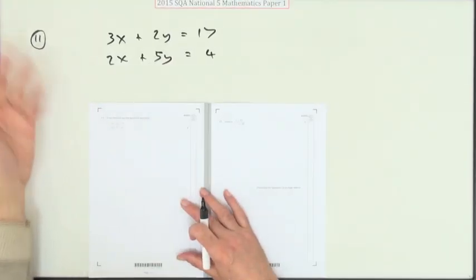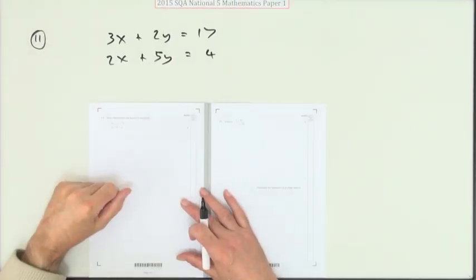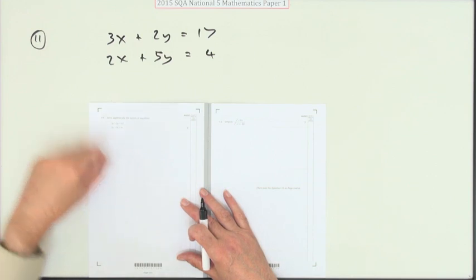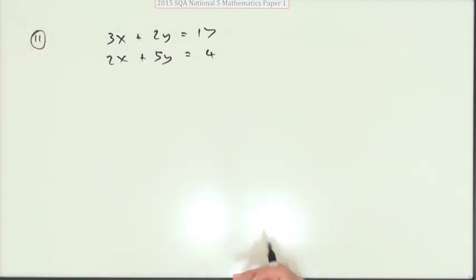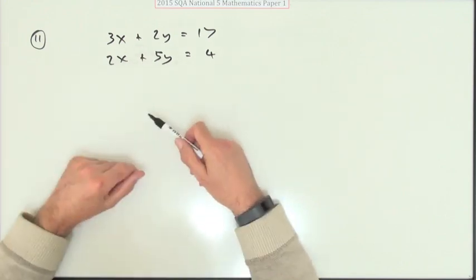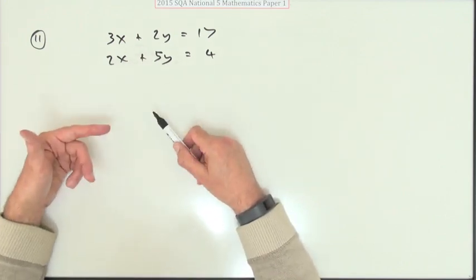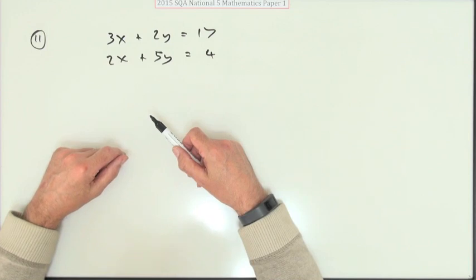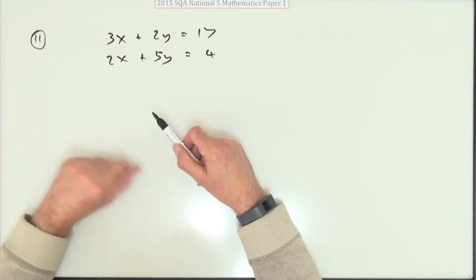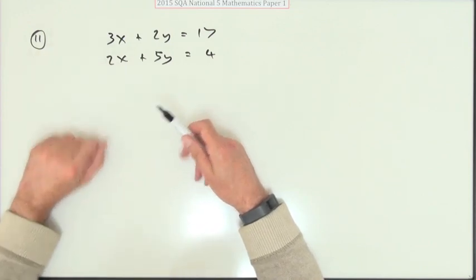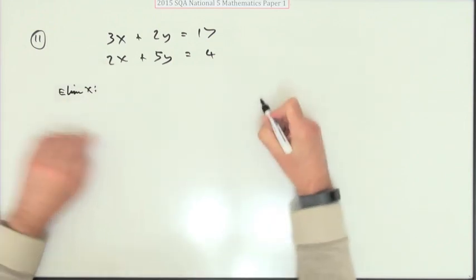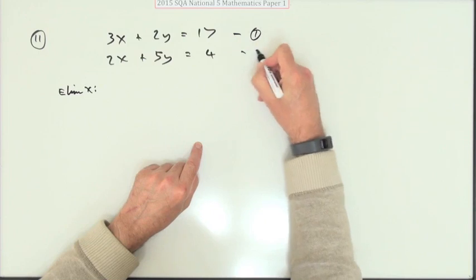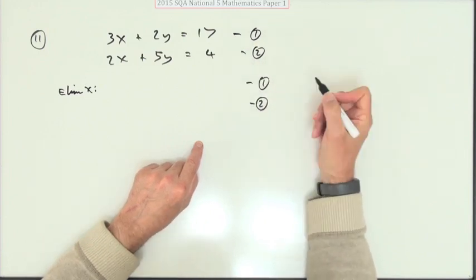Number 11, simple little pair of simultaneous equations. Solve that algebraically. Algebraic again means no guessing. Well, there's not a great deal to choose between them. It's just, what's my favorite little numbers to multiply by? Probably two and three. So I think I'm going to get rid of x, that's going to be my plan. I'm going to eliminate x. So if I call that equation one and I call that equation two, my plan will be this.